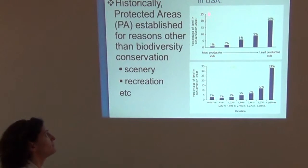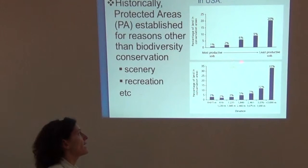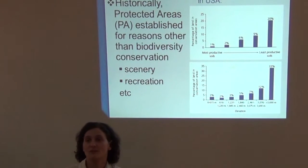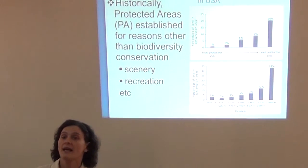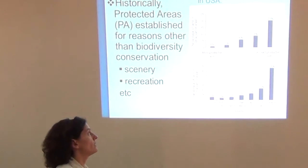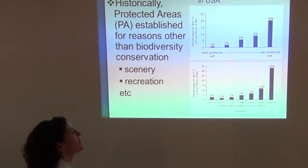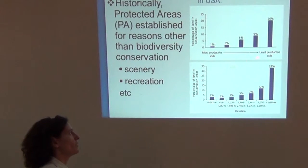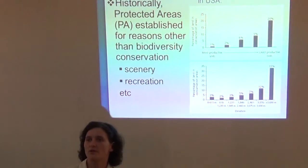Here's an example I like to show to my students to illustrate this. In the United States, an analysis looked at the percentage of land in conservation areas by soil productivity. What we see is that most protected areas overlap with the least productive soils. This makes sense historically because in the United States, the most productive soils are in the Great Plains, where agriculture and cattle raising took hold from the early stages of Western colonization. So the least productive soils are usually protected, and the most productive soils are not, because we are using them for agriculture.